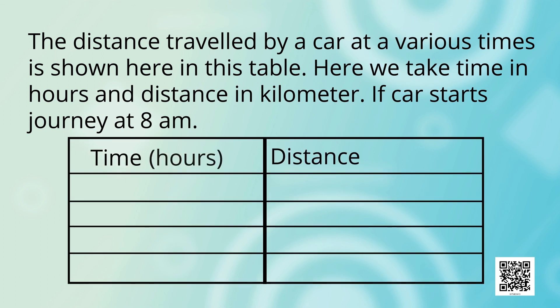Question number 2. The distance traveled by a car at various times is shown here in this table. Here we take time in hours and distance in kilometers. If car starts its journey at 8 a.m., at 8:30 it covers 20 kilometers. At 9 a.m. it covers 40 kilometers. At 9:30 a.m. it covers 60 kilometers.